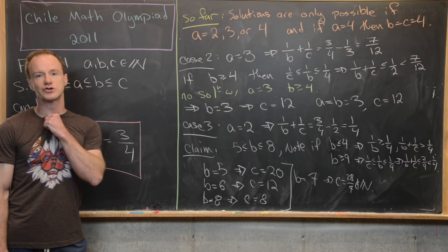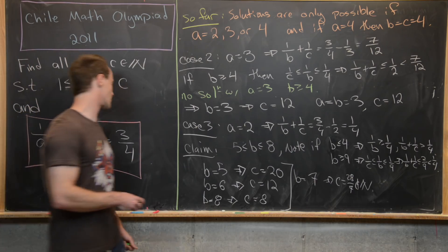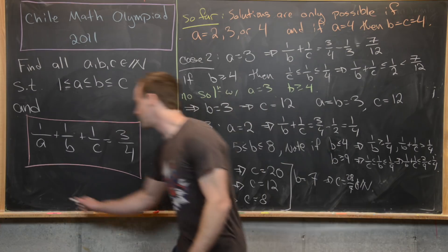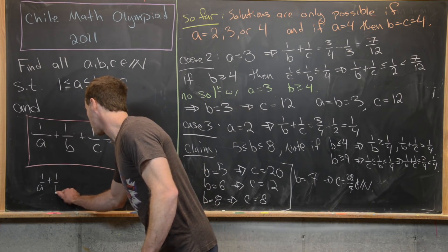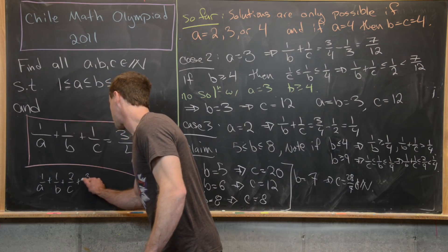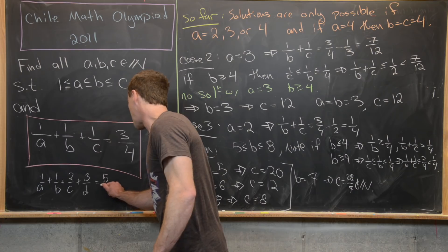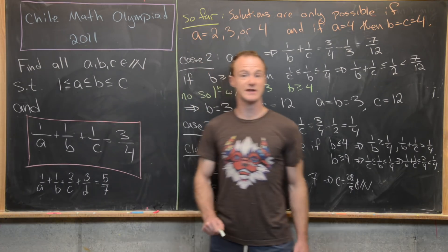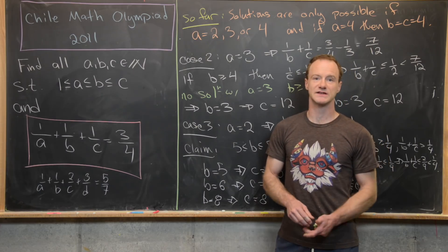That finishes the solution. As a similar challenge problem, you could try finding natural number solutions to 1/A + 1/B + 2/C + 3/D = 5/7, and that's a good place to stop.